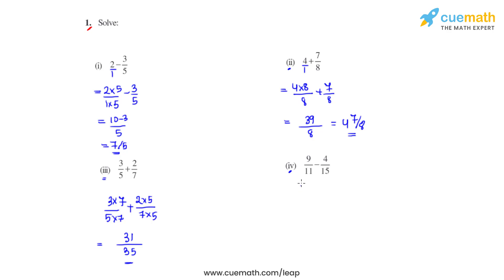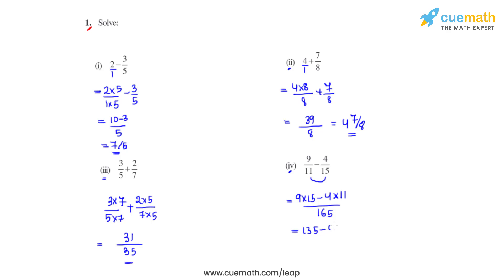Coming to the fourth bit, the denominators are again not the same, so our objective is to make them the same. We will take the LCM of 11 and 15, which is 165. By taking the LCM, we get 9 times 15 minus 4 times 11, divided by 165. That gives us 135 minus 44 divided by 165, and our final answer is 91 divided by 165.